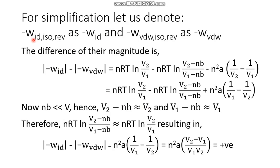This can be proved mathematically. We write the ideal gas isothermal reversible work as −W_id, and the van der Waals isothermal reversible work as −W_vdw. The difference in their magnitudes is the work done by the ideal gas minus the work done by the van der Waals gas. The work expression for isothermal reversible expansion of an ideal gas is nRT·ln(V₂/V₁).